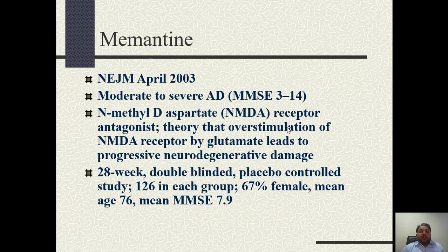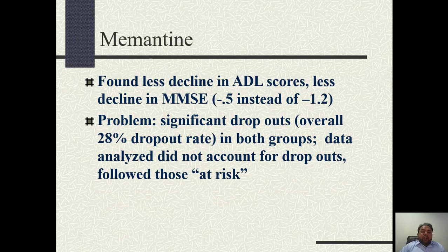In severe dementia, memantine is required. Memantine is an NMDA receptor antagonist. Theoretically, in Alzheimer's disease, overstimulation of the NMDA receptor by glutamate leads to progressive neurodegeneration. Giving this NMDA receptor antagonist blocks the glutamate-induced neurodegeneration. In a trial of 126 patients, MMSE declined by only 0.5 per year in the memantine group, compared to 1.2 per year without memantine — a statistically significant difference.